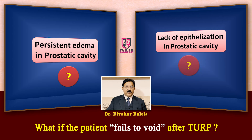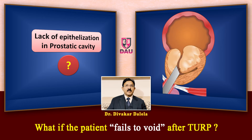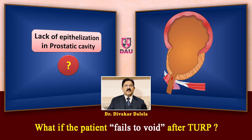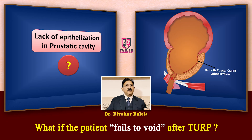The second situation is lack of epithelization in the prostatic cavity. Let me explain what I mean by this and why it happens. If you do a transurethral resection and leave behind a uniformly smooth fossa cavity, then epithelization will start from the bladder neck side and also from the urethral side. From both sides the epithelium grows and the fossa gets outlined by normal epithelium in three to five days. Once you remove the catheter, because of the smoothly lined fossa, the patient will void nicely.